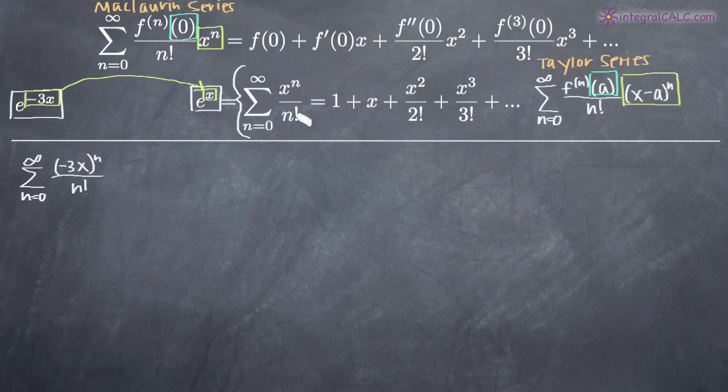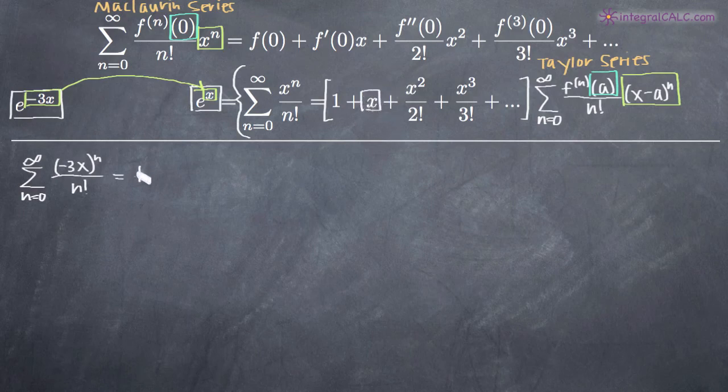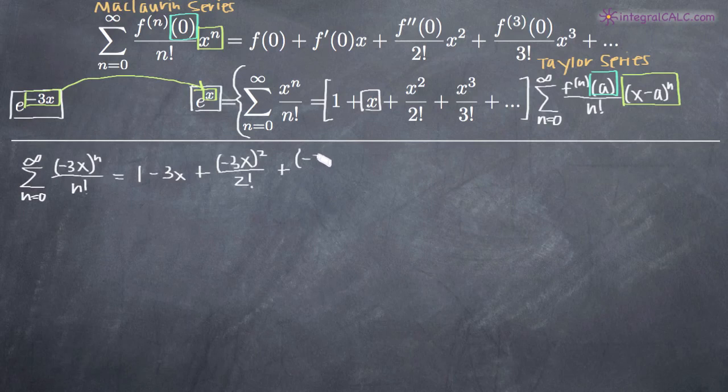What it's also going to allow us to do is write out the series here because we've been given it on the right hand side. So all we need to do is follow this to expand it. So we'll end up with 1 and then remember we're substituting negative 3x for x. So when we plug that in here, we're going to get minus 3x. Then we'll get plus negative 3x squared divided by 2 factorial plus negative 3x cubed divided by 3 factorial.